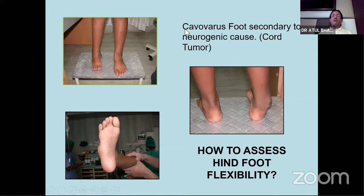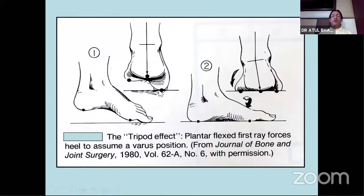The key thing in cavus foot in terms of management is to assess the hindfoot. The examiner will always assess how you test for hindfoot flexibility. This foot is in varus - is it really in varus, or is this a pseudo varus? This is the basis of what is called the Coleman block test. Whenever you get a forefoot pronation or a forefoot drop, in order to weight bear, the lateral side of the foot also collapses downwards. When the lateral foot collapses, the heel goes into varus - because of what is called the tripod effect. You cannot walk on the ball of the toe, so to compensate the lateral border shifts down and the heel which was neutral shifts into varus.